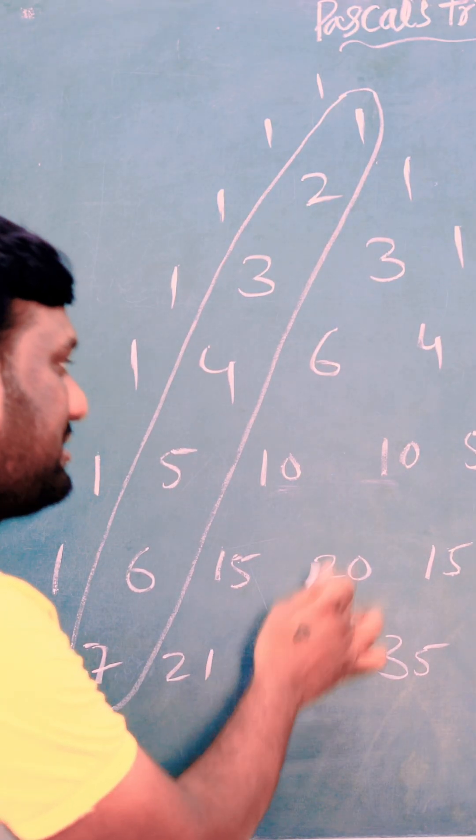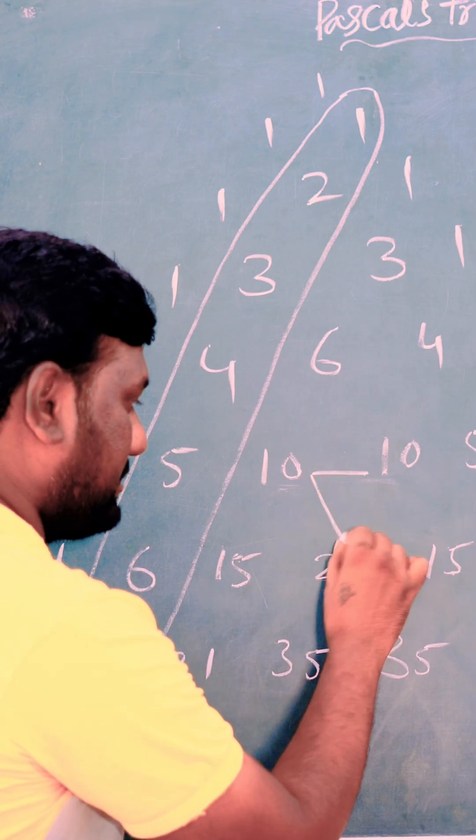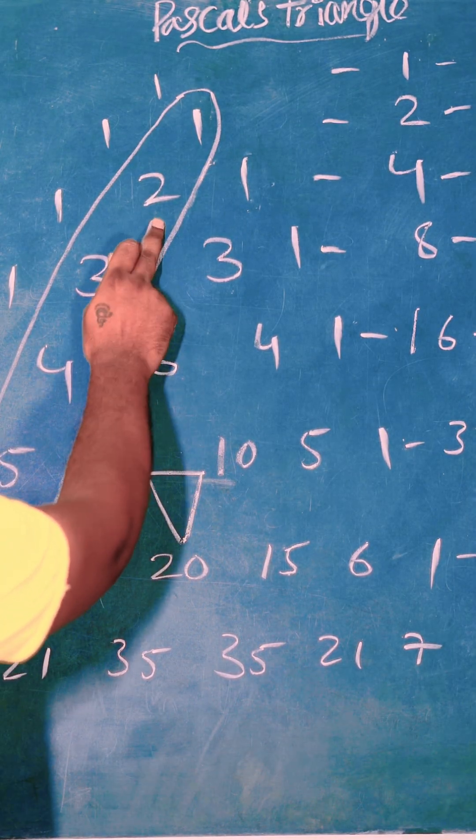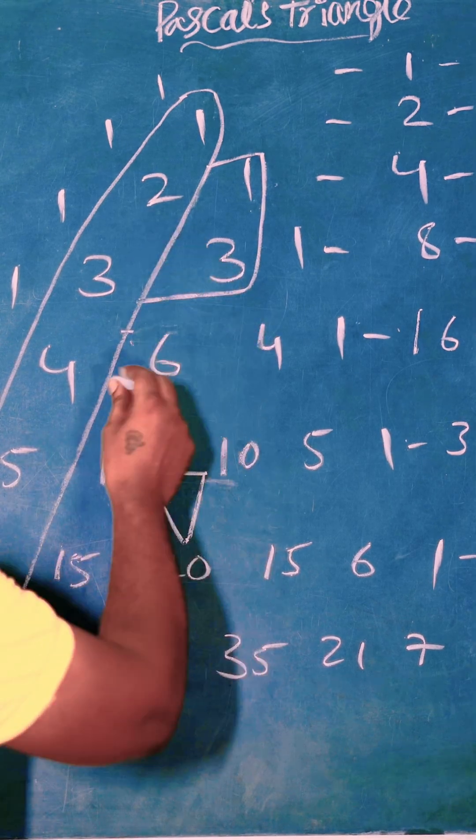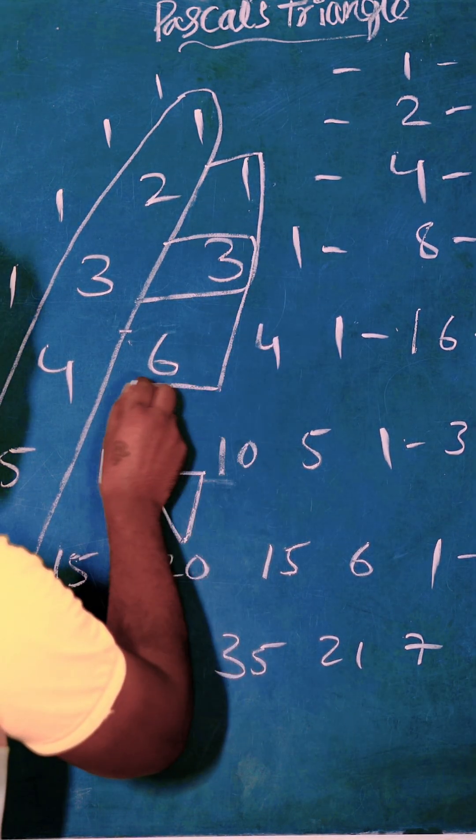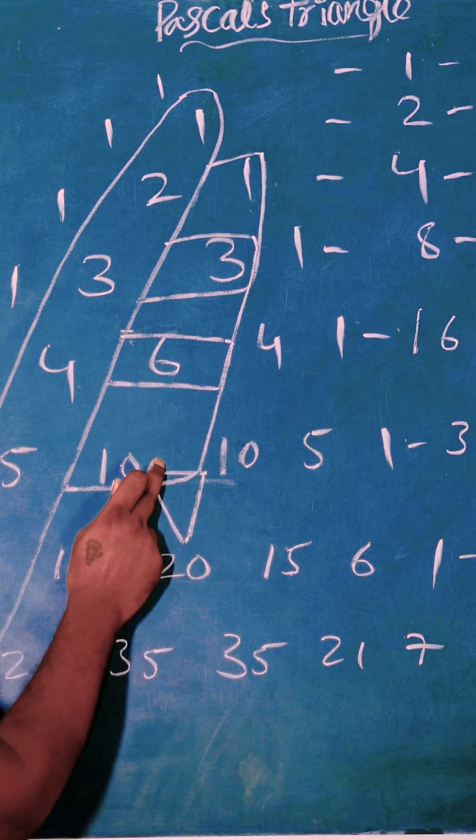The below number is sum of the above two numbers. Here 10 plus 10 is 20. In this second diagonal, we will get perfect squares. 1 plus 3 is 4, which means 2 square. 3 plus 6 is 9, which means 3 square is 9. 6 plus 10 equals 16, and 4 square is 16.